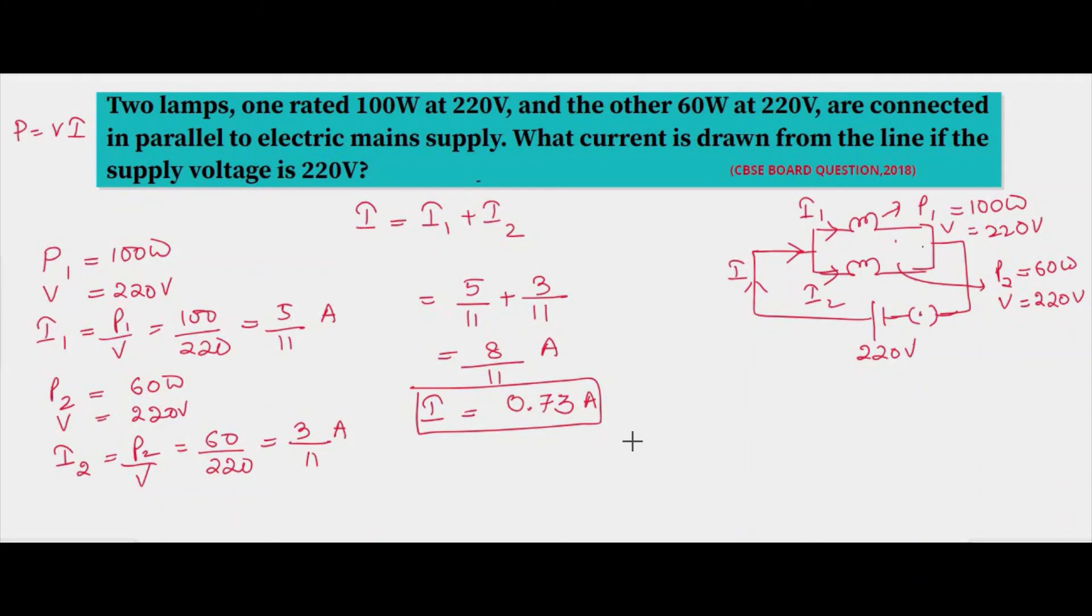Now remember one thing: in a parallel circuit when the resistors are connected in parallel, the overall resistance of the circuit decreases. So this is the answer to this question, that the current drawn from the line is 0.73 ampere. So this is all for today, I hope you have understood this. Thanks for watching.